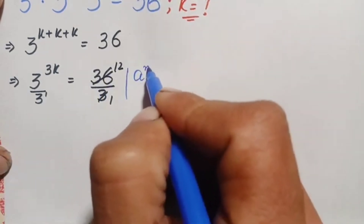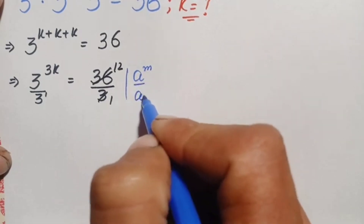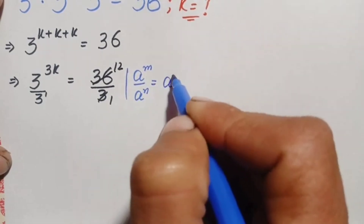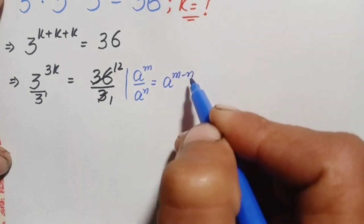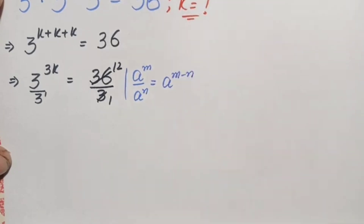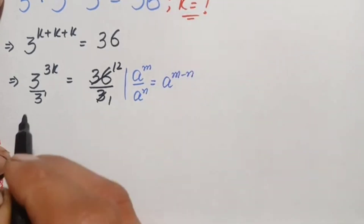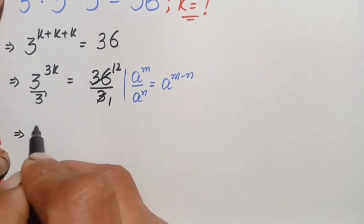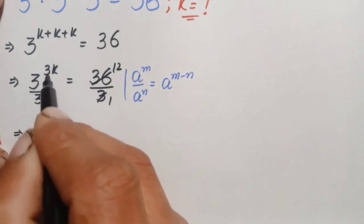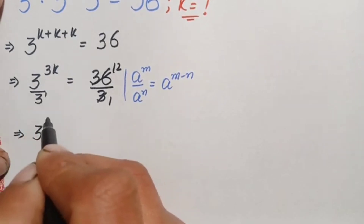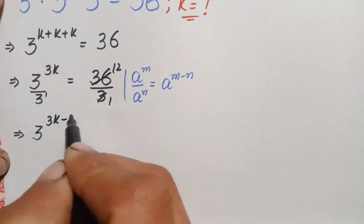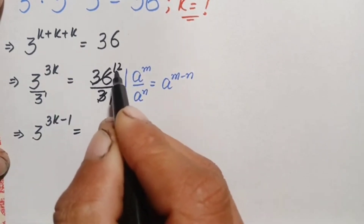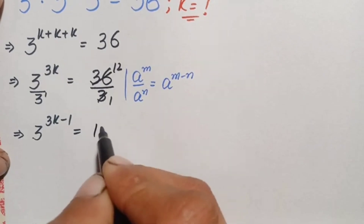Using the identity: a^m divided by a^n equals a^(m−n), the left hand side becomes 3 raised to power 3k minus 1, and the right hand side simplifies to 12.